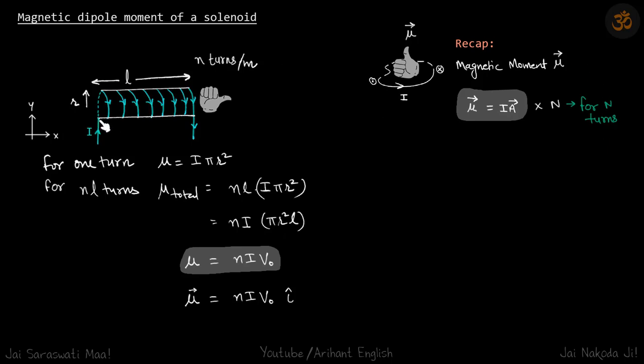Now let's come back to the solenoid. The current goes in here, takes certain turns, and comes out. Length is L, radius is R. Using the right-hand thumb rule, we can determine the direction will be towards the right.